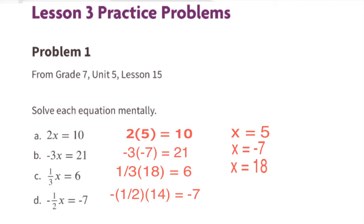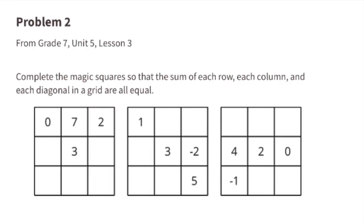7 divided by 1/2 equals 14. I also know that 7 is half of 14, so x equals 14. Looking at the equation one more time: we can think of it as half of 14 equals 7, so negative half of 14 equals negative 7.